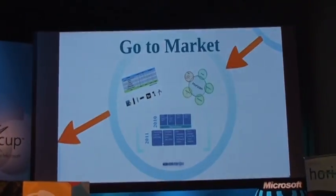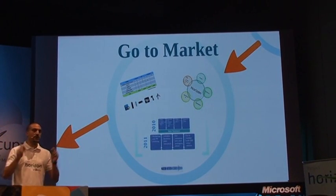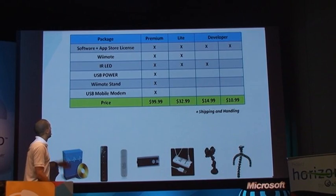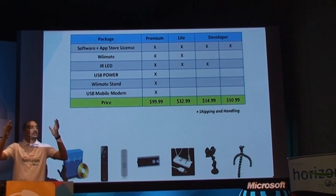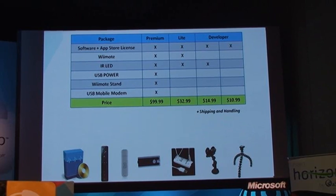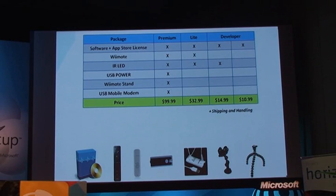Back to the presentation: the go-to-market plan. This is a nice gadget — how do we get it out there? First, you need good packaging. The first package on the left is called Premium. It includes the software plus application licensing, the App Store, the Wii remote, IR LED, USB power, the Wii remote stand, and a USB mobile modem. We also said we have phone calls — let's see the full package with Munir. He's going to go to phone access and start the clicker again.